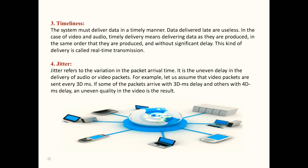4. Jitter. Jitter refers to the variation in the packet arrival time. It is the uneven delay in the delivery of audio or video packets. For example, let us assume that video packets are sent every 30ms. If some of the packets arrive with 30ms delay and others with 40ms delay, an uneven quality in the video is the result.